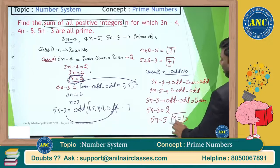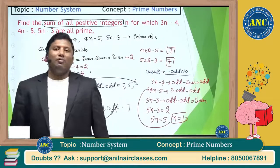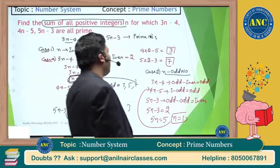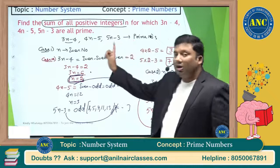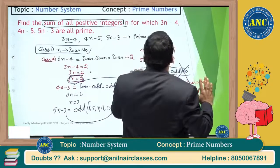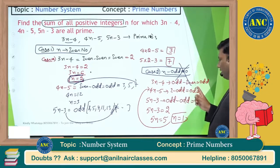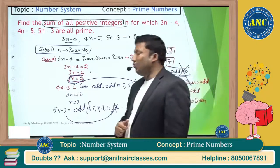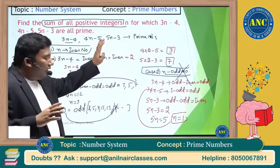So 5n minus 3 must equal 2, giving 5n equals 5, so n equals 1. But if n=1: 4(1) minus 5 = 4 minus 5 = negative number. That's not valid. So Case 2, where n is odd, is not possible.